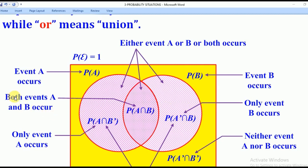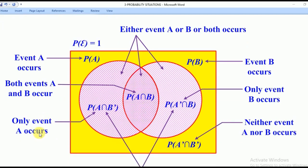They can also ask for the Probability that both events A and B occur. Because of the word AND, it means intersection. So when they ask for the Probability that both events A and B occur, they want A intersection B. When they ask for the Probability that only event A occurs, it means they want A intersection B complement.